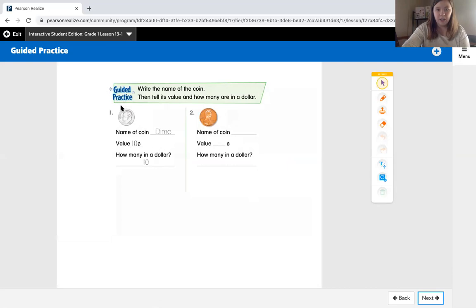I'm going to look at this coin. The first question asks the name of a coin. I see that this is a small silver coin with a face on it. I know my silver coins are nickel, dime, and quarter. Quarter and nickel are bigger than a dime, so I'm going to say this is a dime. A dime is worth 10 cents and there are 10 dimes in a dollar.